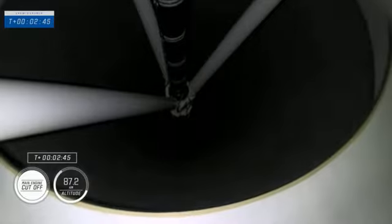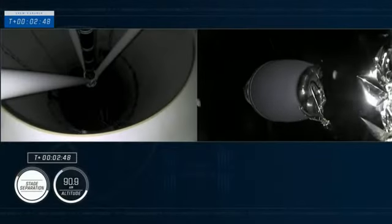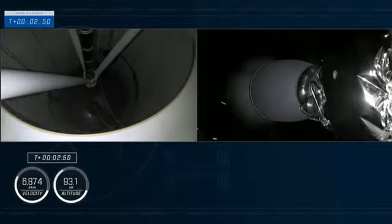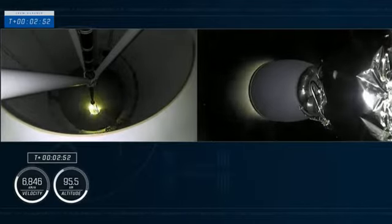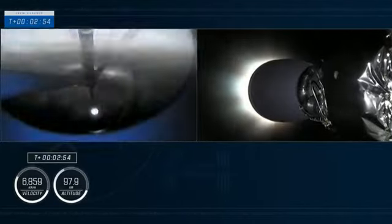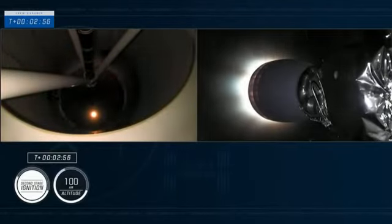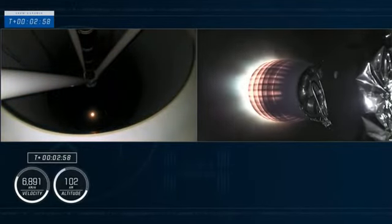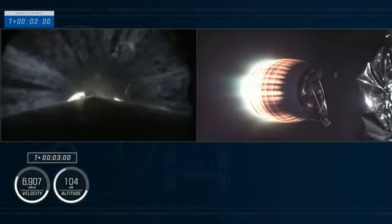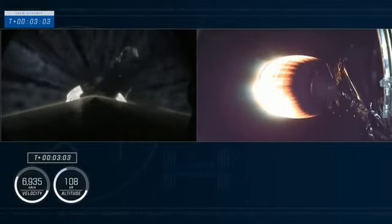Stage separation. Stage two alpha. Copy, two alpha. Alright, we have ignition of the second stage. And you saw that green flash of that TEA-TEB fluid. That's that ignition. And Crew-3 is now on their way to the International Space Station.